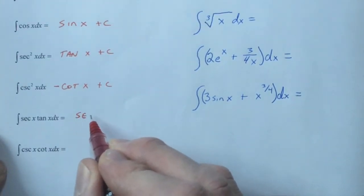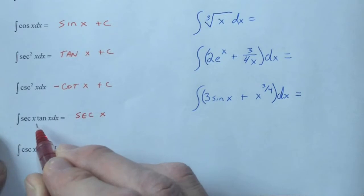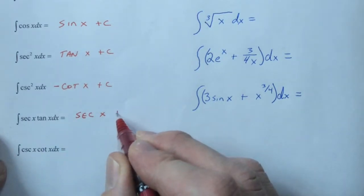Secant derived to secant times tangent, so the antiderivative of secant times tangent will be secant plus c.